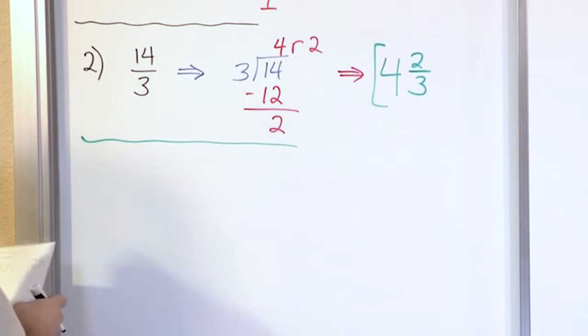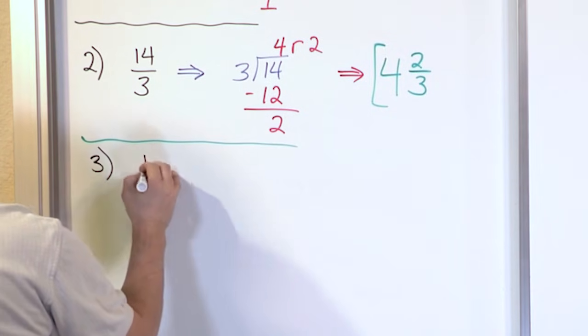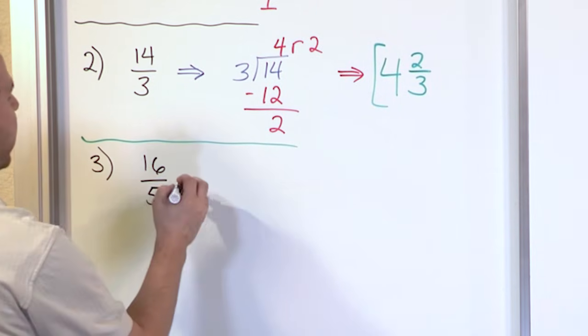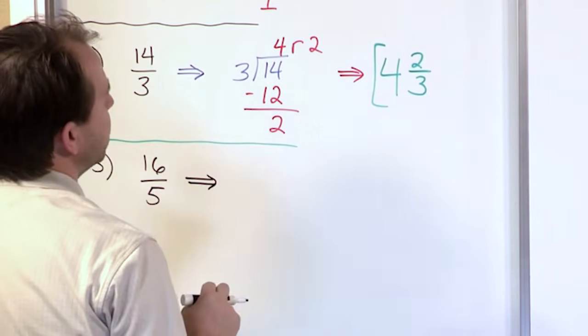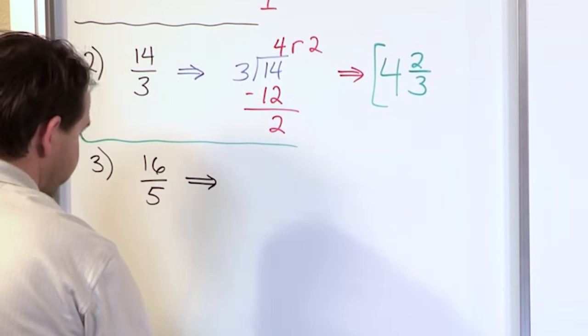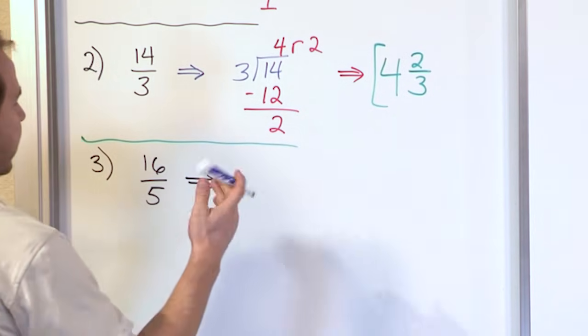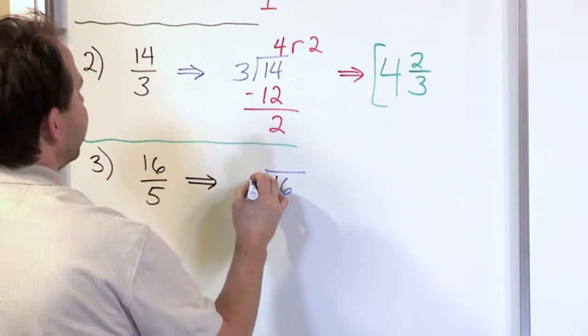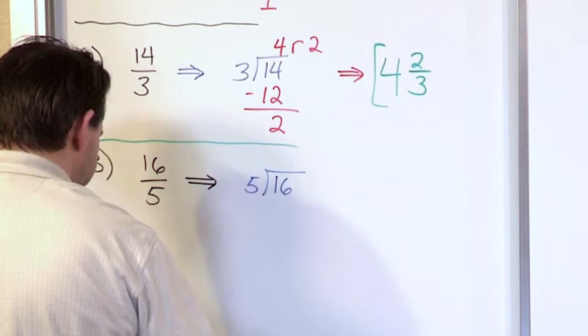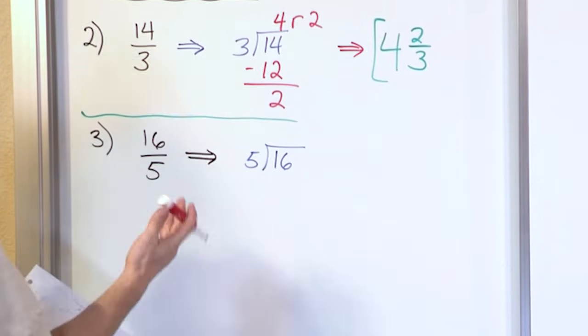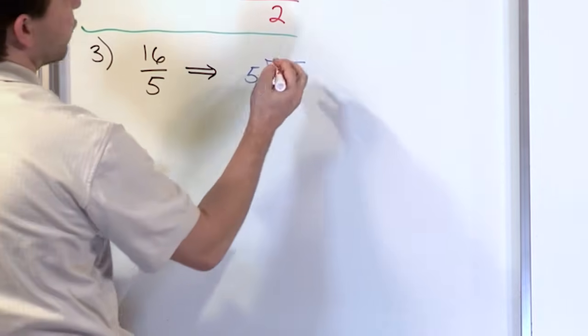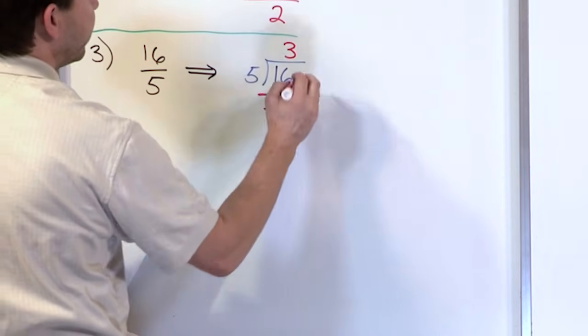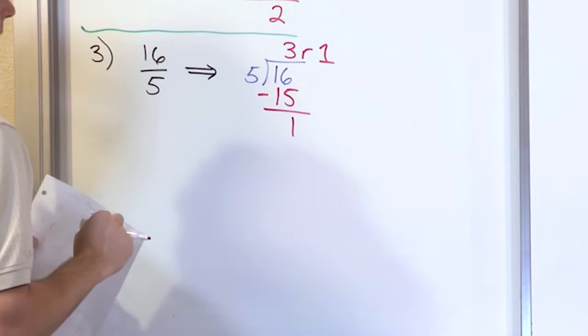We'll keep marching along, giving you some practice. What if I have 16 fifths? How do I convert that to a mixed fraction? I'm going to have 16 divided by 5. 5 times 3 is 15, that's about as close as I can get. So 5 times 3 is 15, and when I subtract, I get a remainder of 1.